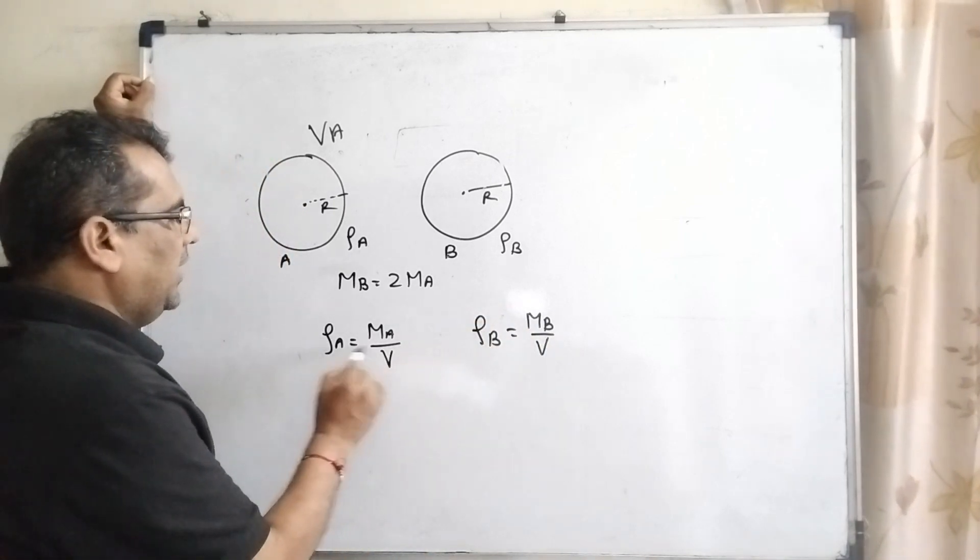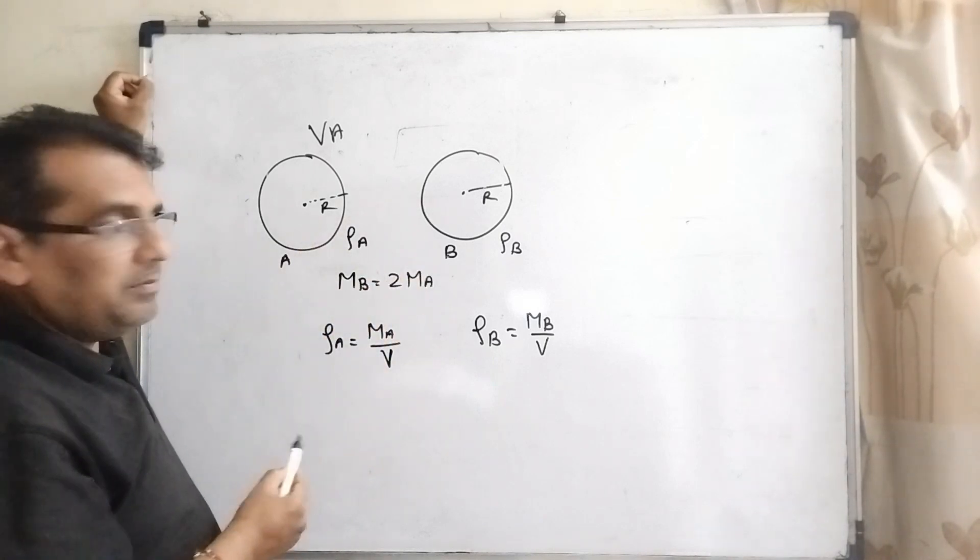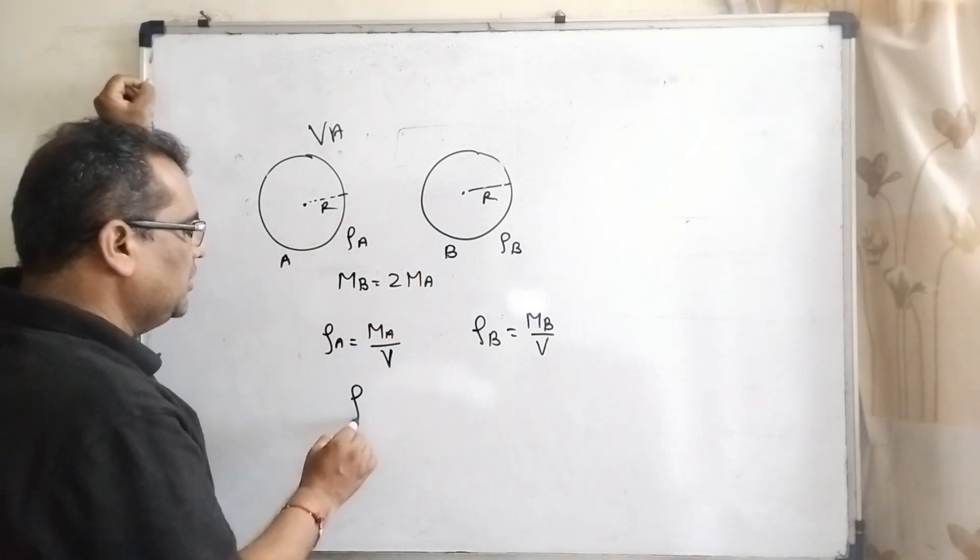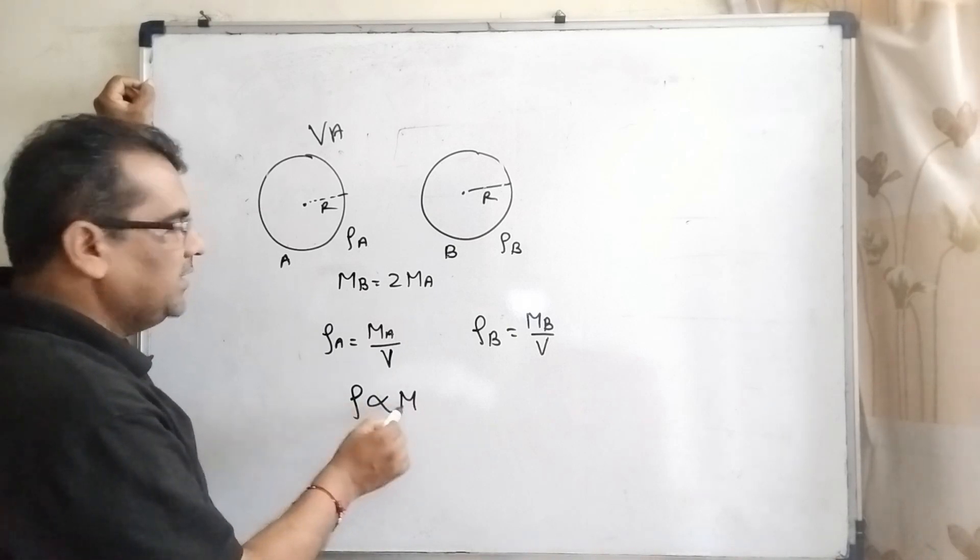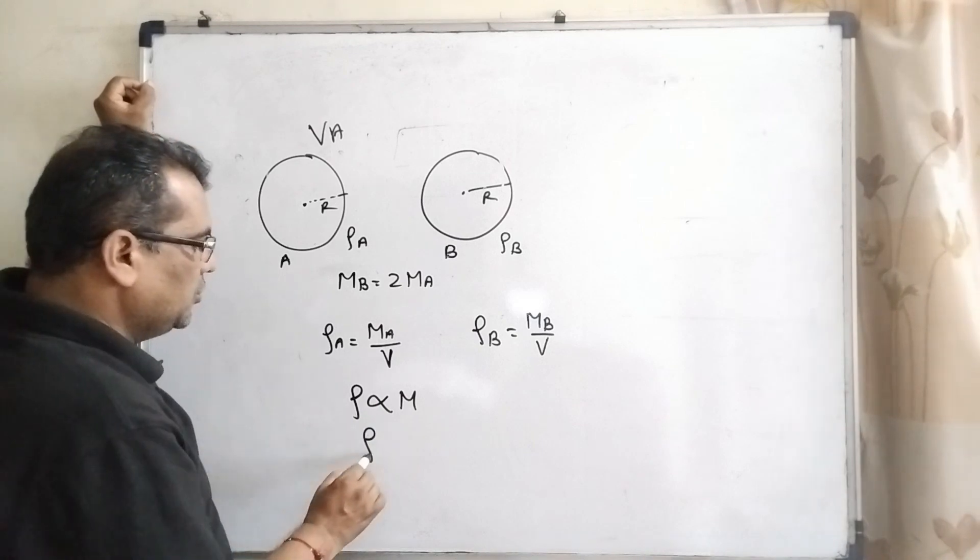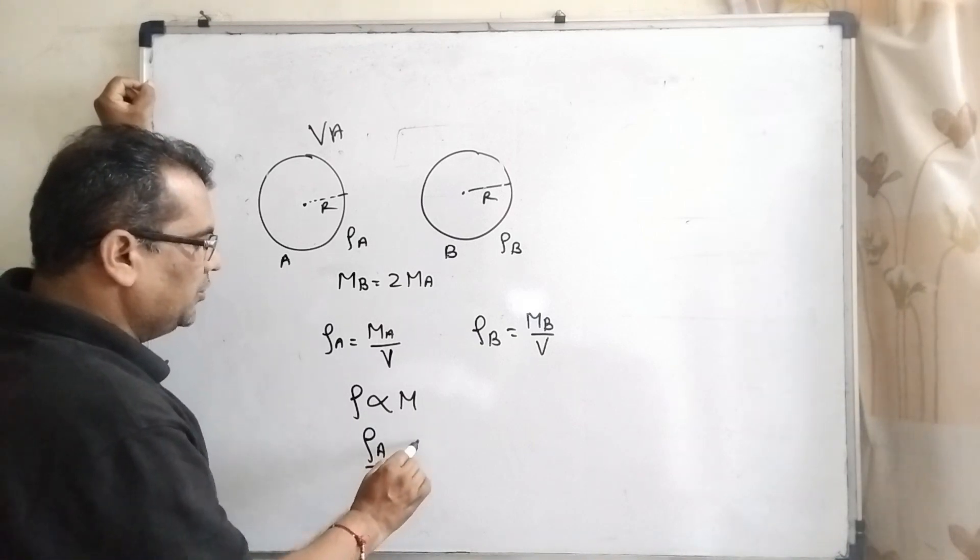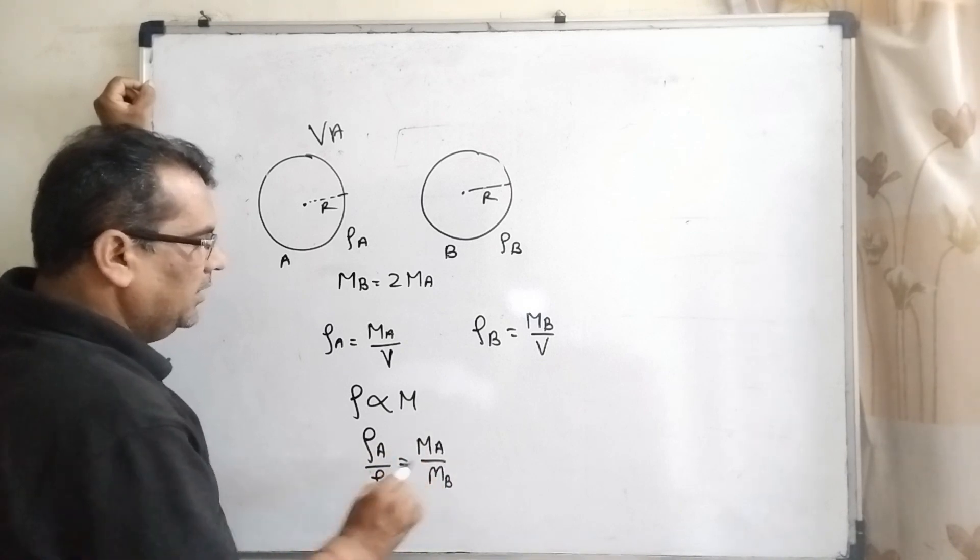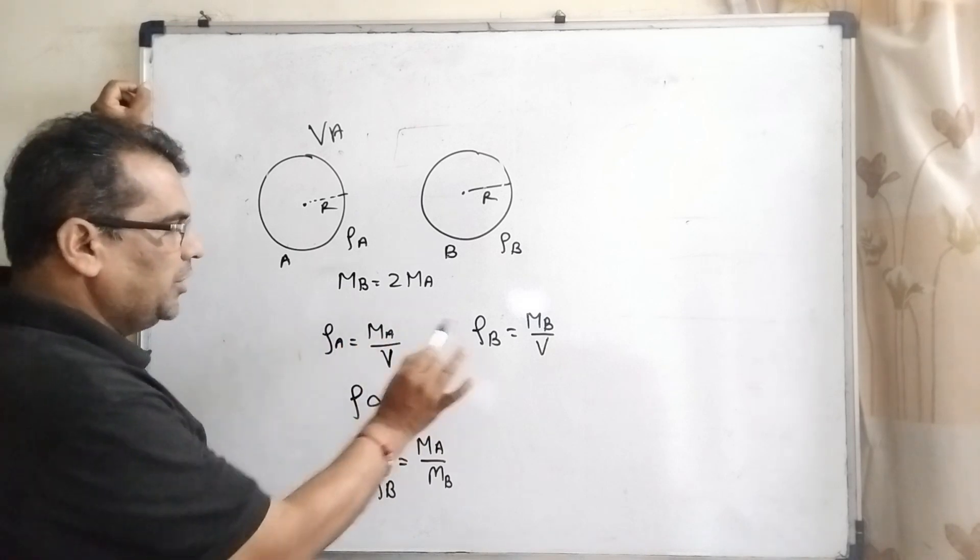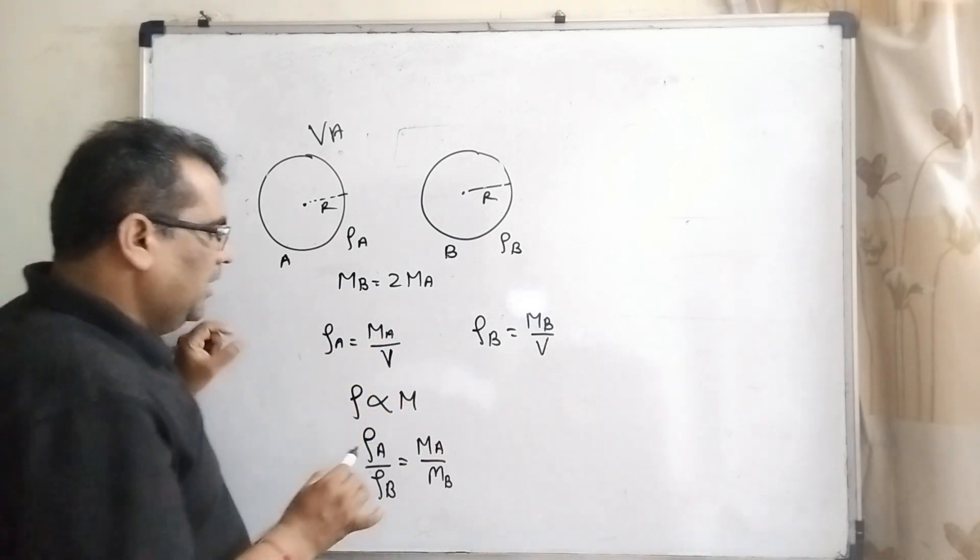You can see the volume is the same because the radius is the same. Here only density is changed. So we can say ρ is directly proportional to mass. Therefore, ρA upon ρB equals Ma upon Mb. I hope you understand this relation between mass, volume, and everything.